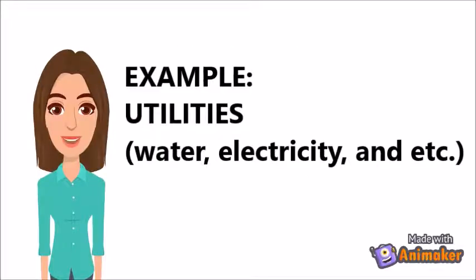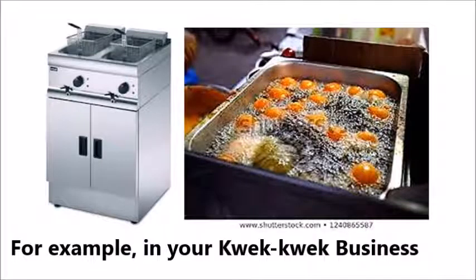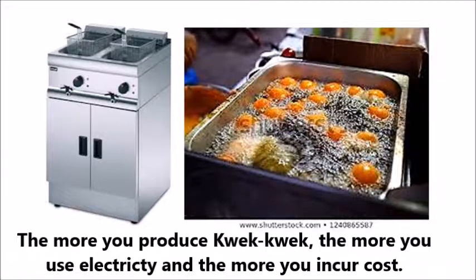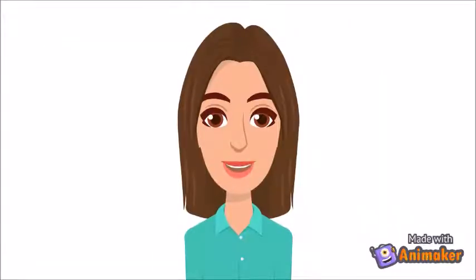A blended cost means a portion of the total cost remains unchanged while another portion depends on output. For example, utilities: whether you produce or not, you still use electricity and water in your business. But your business can also depend on utilities — for example, in your quick-quick business, your fryer is connected to electricity. The more quick-quick you produce, the more electricity you use and the more cost you incur. This is why utilities, an example of a fixed cost, can also be a variable cost. However, on this video, we're going to focus only on fixed and variable costs.